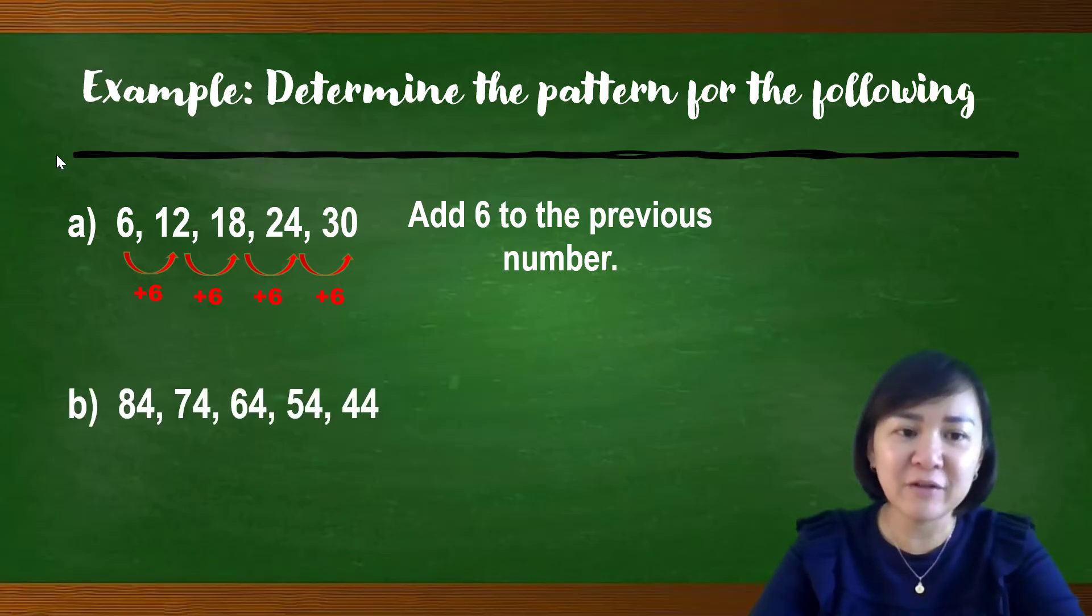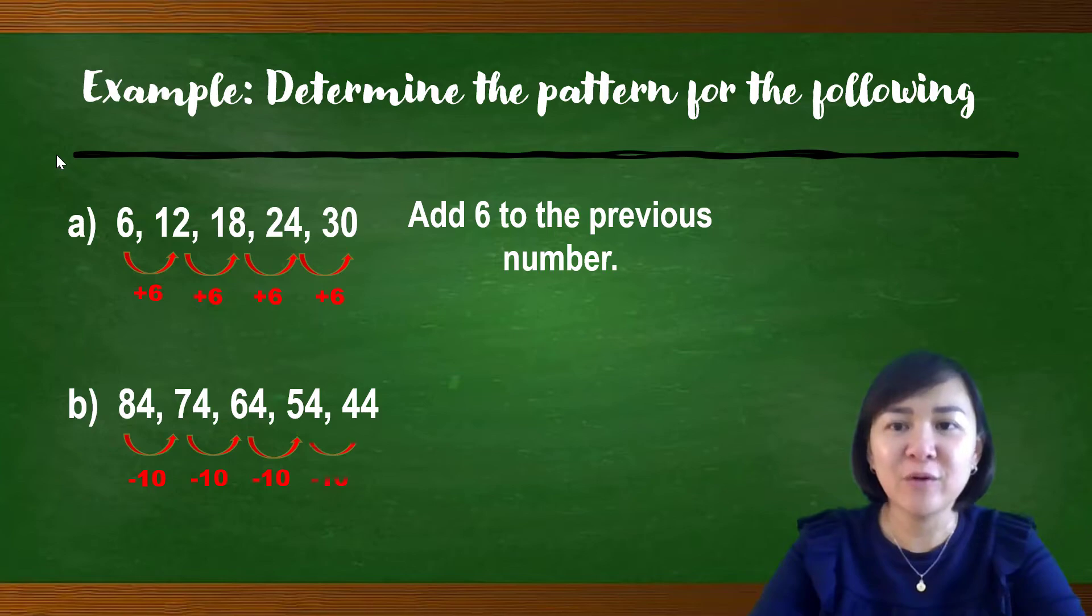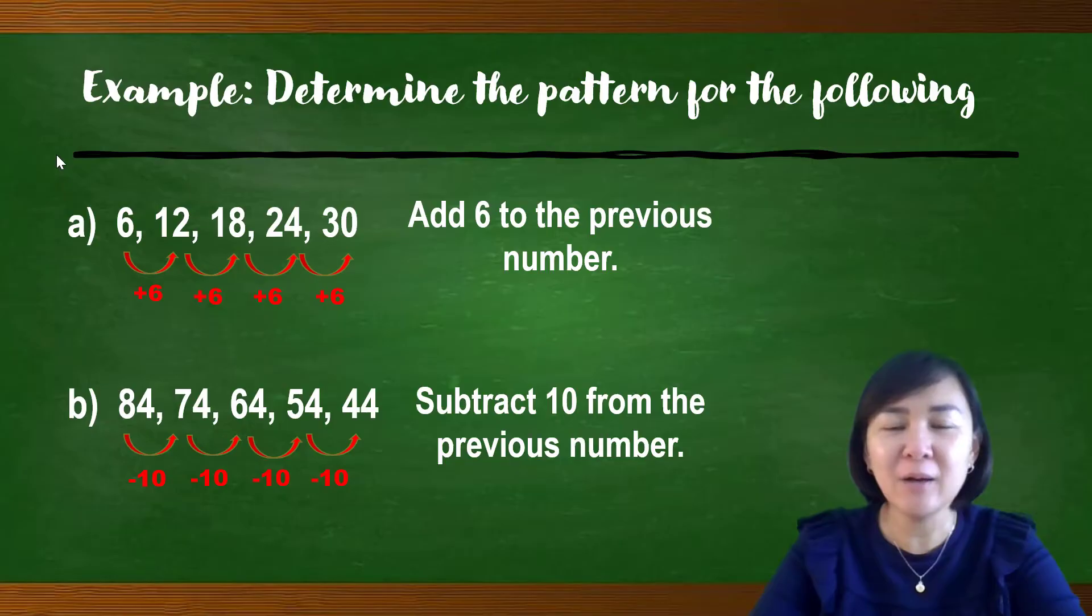For the next question, 84, 74, 64, 54, and 44. Observe the sequence. Is it ascending or descending? Yes, it is in descending order. Okay, when it is in descending order, means that the value is decreasing. From 84 to 74, what is the difference between the two numbers? So, 84 minus 74, we notice that the patterns actually is minus 10. Now, work on the second number. Is it 74 minus 10, can we get 64? Yes, when 74 minus 10, we can get 64. Okay, therefore, we can see the patterns for the sequence, which is subtract 10 from the previous number.